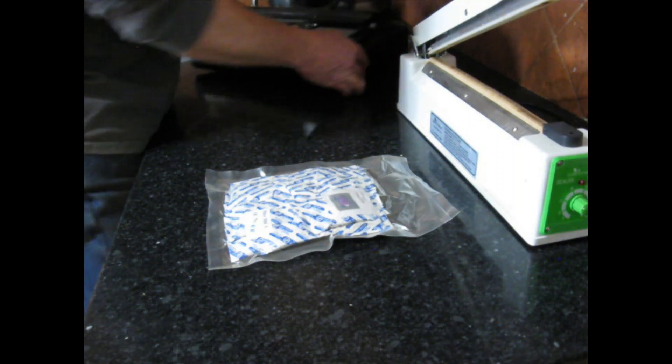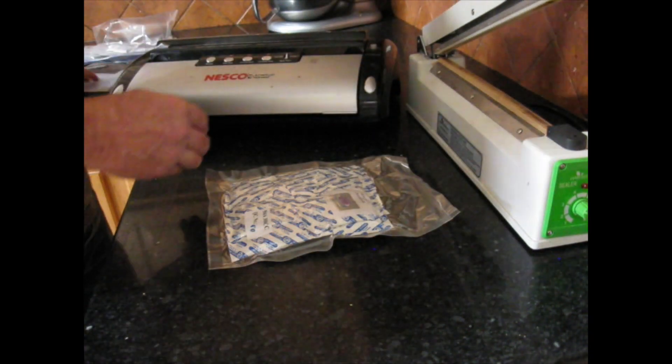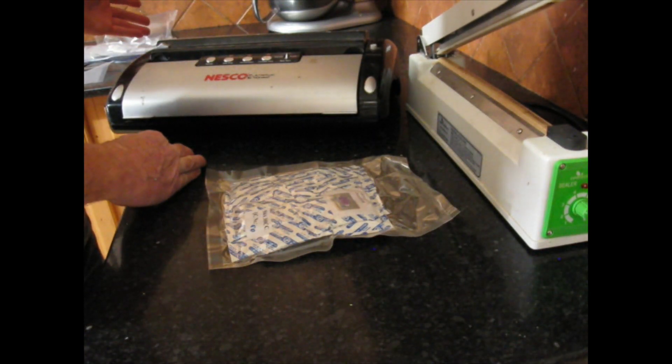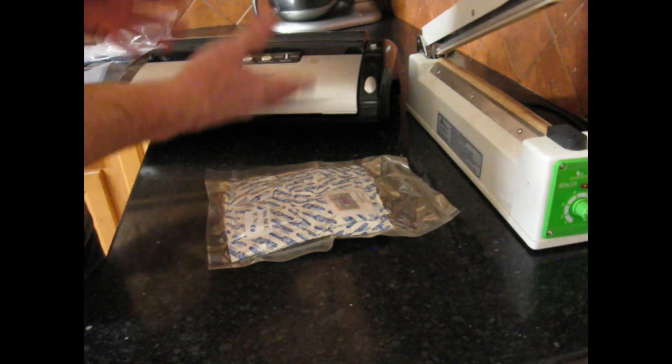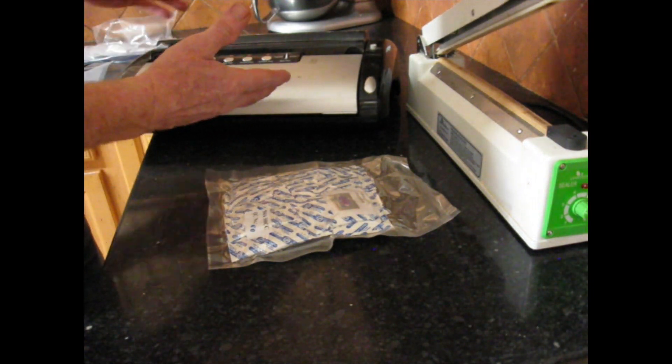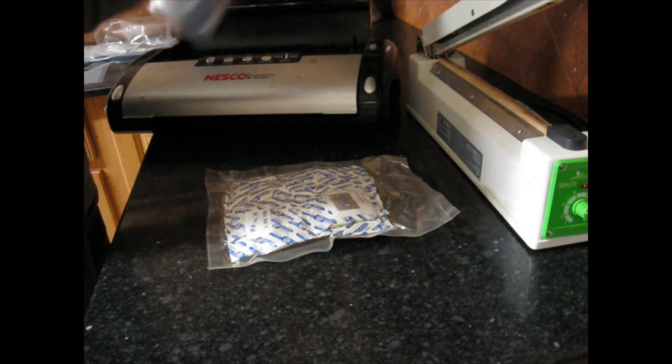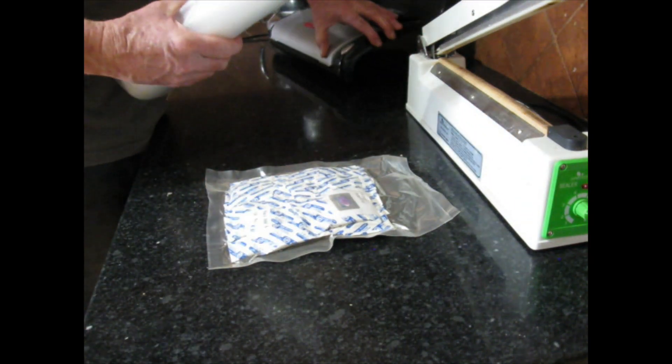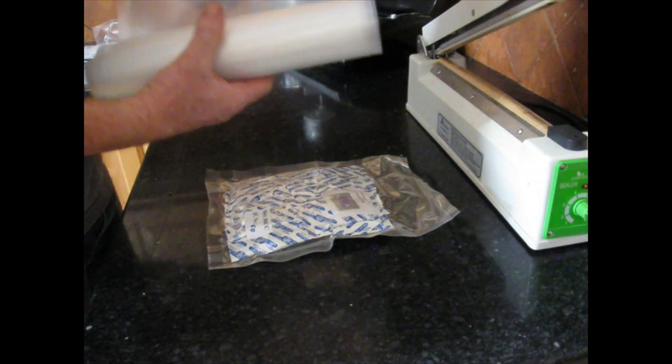Years ago, when we used to dehydrate, we had this little guy from American Harvest. It was a vacuum sealer. And along with it, it had a roll of bags like this that you can get off the internet.